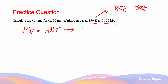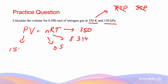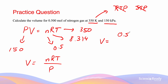Our ideal gas law is PV = nRT. The values we know are: T = 350 K, R = 8.314 (from the data sheet), n = 0.5 moles, and P = 150 kPa. The only unknown is V. We rearrange the formula by dividing both sides by P to get V = nRT/P, so V = (0.5 × 8.314 × 350) / 150.